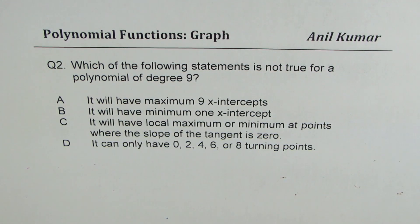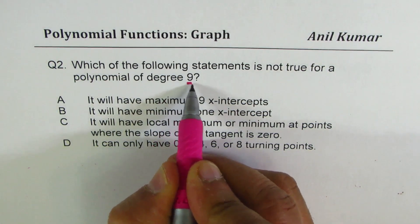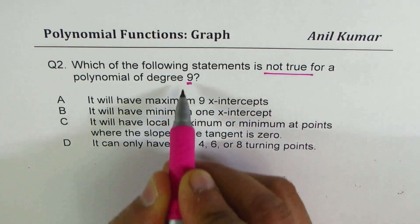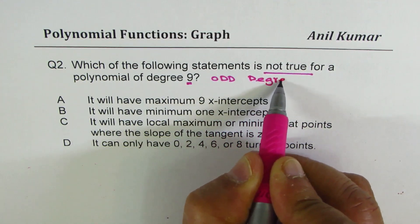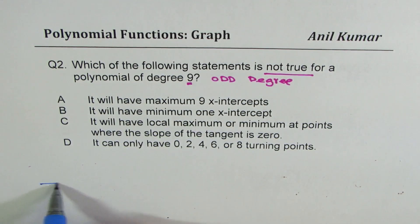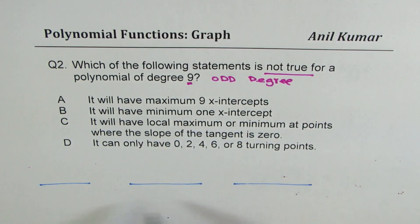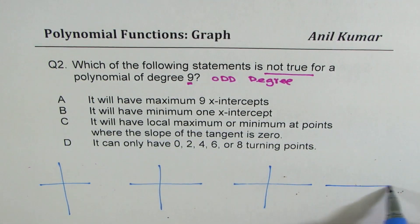Question number 2: Which of the following statements is not true for a polynomial of degree 9? So this time we're looking at an odd degree function — degree 9. We again have 4 options, and we'll sketch 4 different graphs to illustrate why something is correct or incorrect.